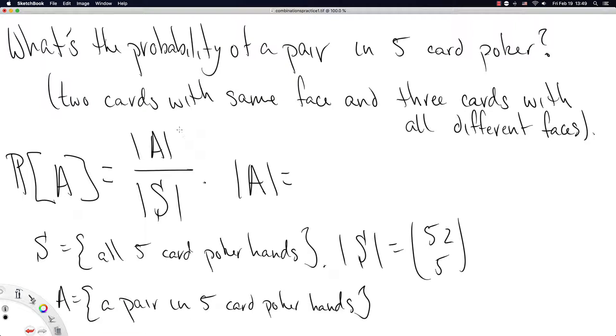To get two cards with the same face, first realize there are 13 different faces in a standard deck. Of the 13 faces, we specify one of them—you could specify an ace, a 2, a 3, a 4, a 5, a 6. There are 13 different faces you could specify.